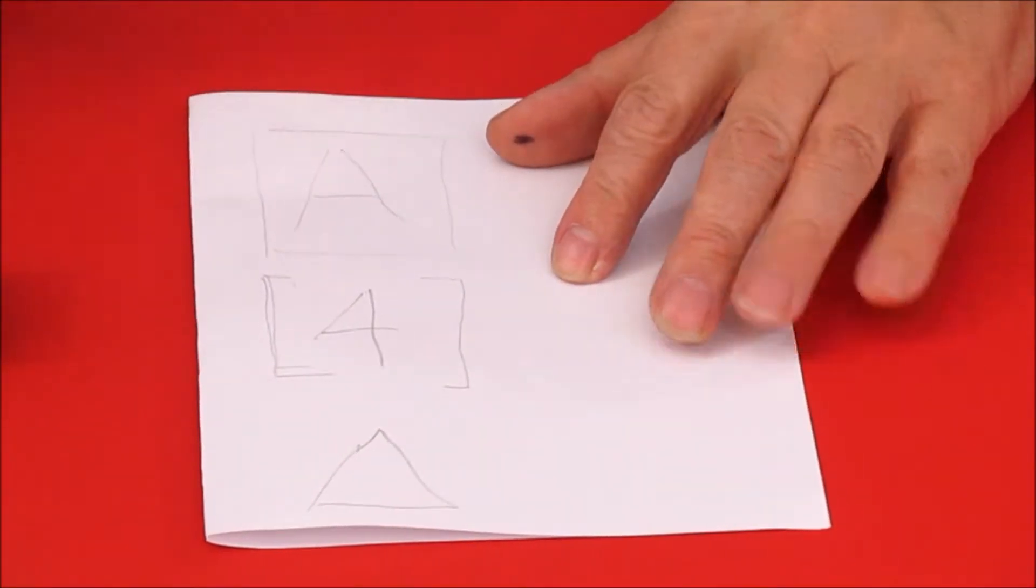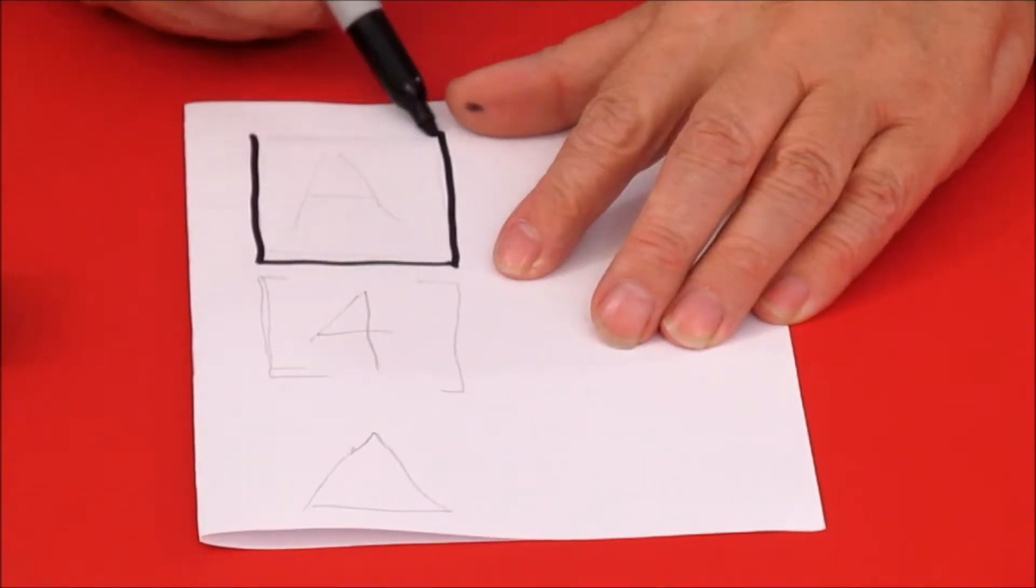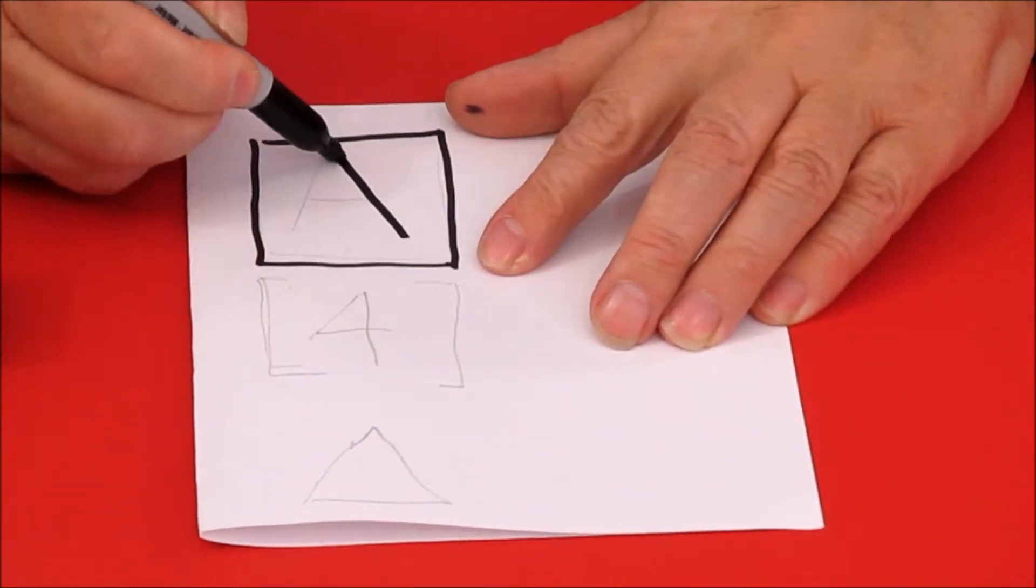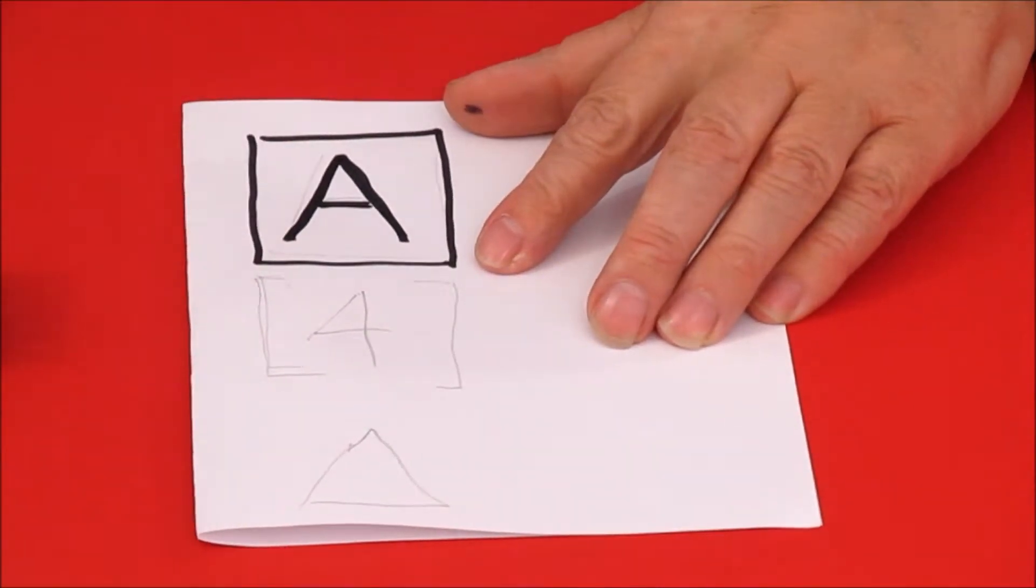So let me just briefly go through the three symbols we use. If you see this symbol, that means button A.